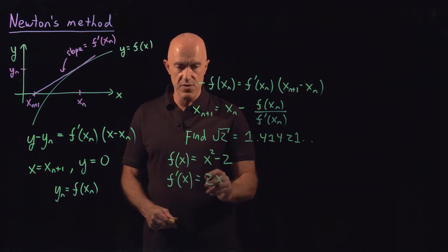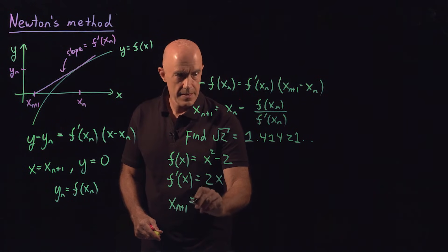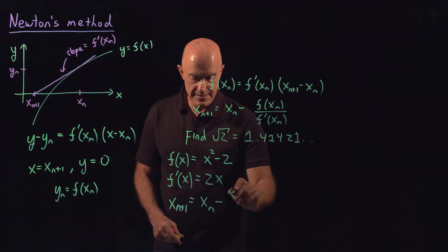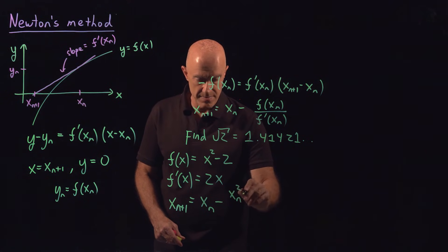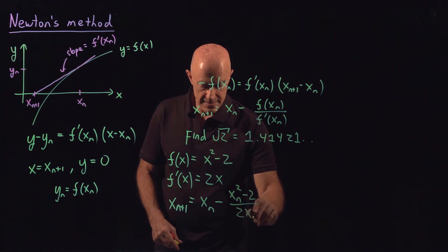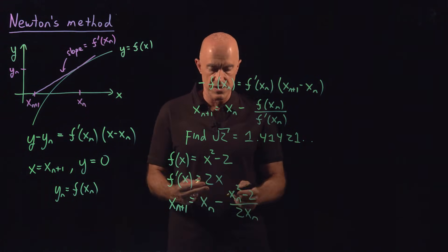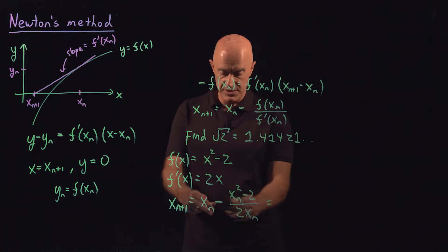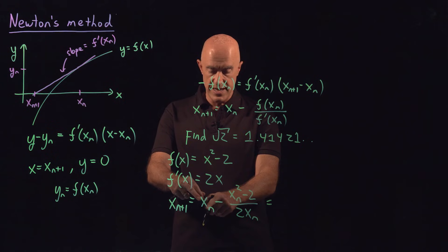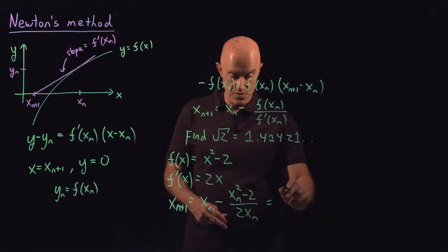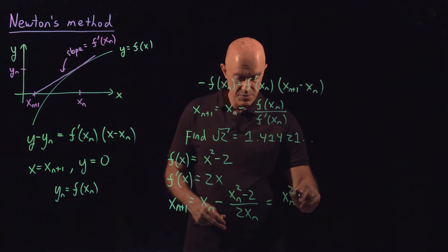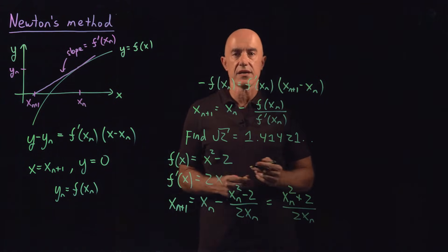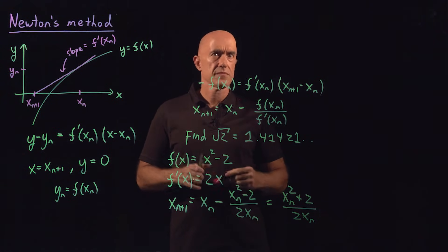And then Newton's iteration will be x_{n+1} equals x_n minus f of x_n, x_n squared minus 2 over 2x_n. And this is what you would program in a computer. This would be your correction factor to x_n. But by hand calculation, it's easier to combine them. So if I put them under 2x_n, we'll have 2x_n squared minus x_n squared, which is x_n squared plus 2 over 2x_n. For a hand calculation.